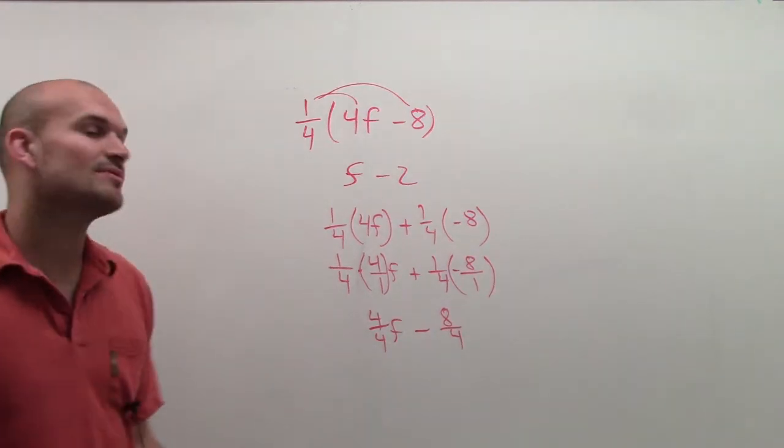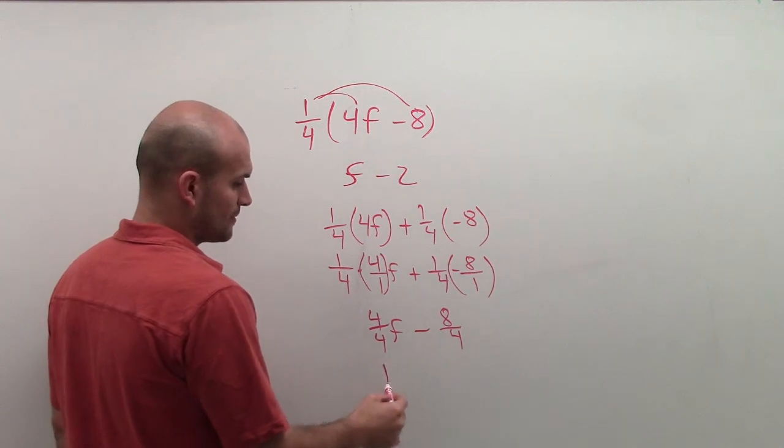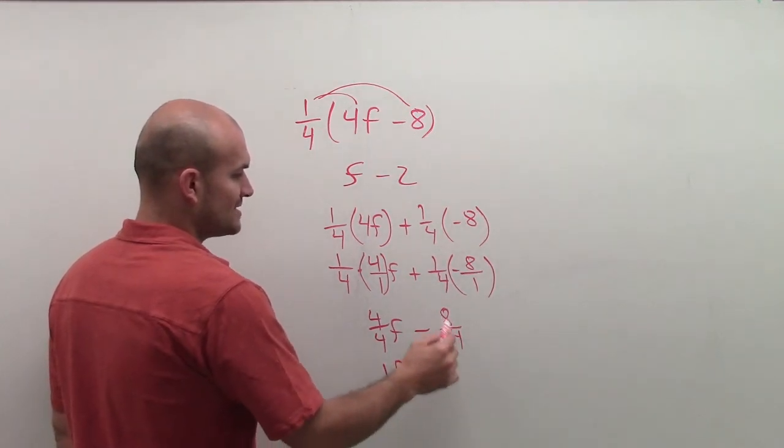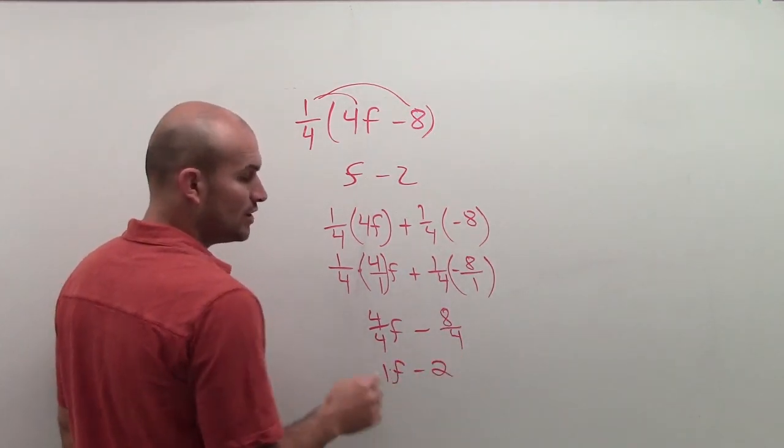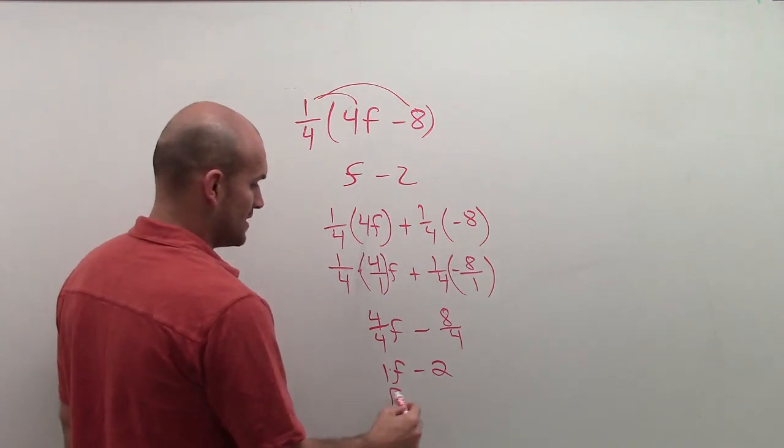So now, simplifying this, 4 divided by 4 is 1, 1f, minus 8 divided by 4 is 2. We don't need to write 1 times f. We can just write f minus 2.